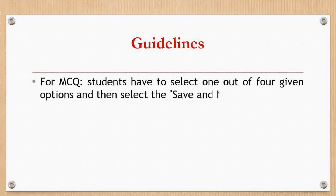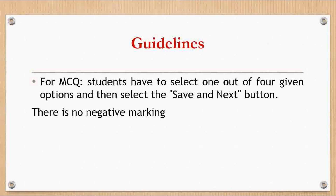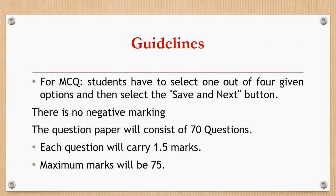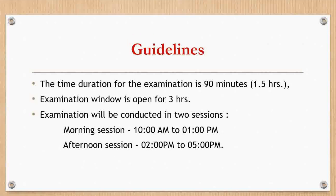For MCQs, students have to select one option out of four given options and then click on the 'Save and Next' button so the next question will appear. Most importantly, there is no negative marking for this examination. For each correct answer you will get marks. The question paper will consist of 70 questions, each carrying 1.5 marks, and the maximum marks will be 75. You can attempt any number of questions out of the 70.